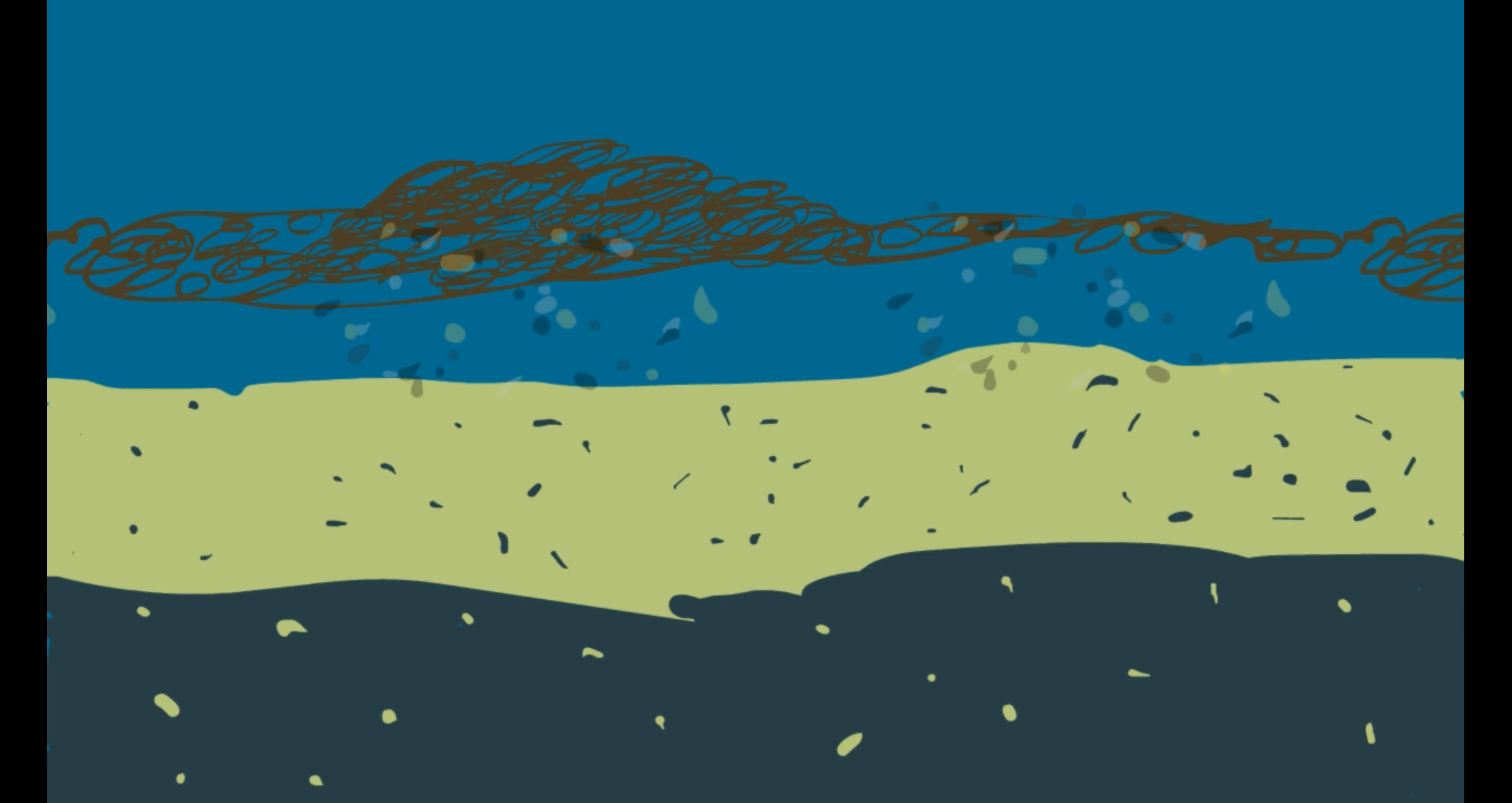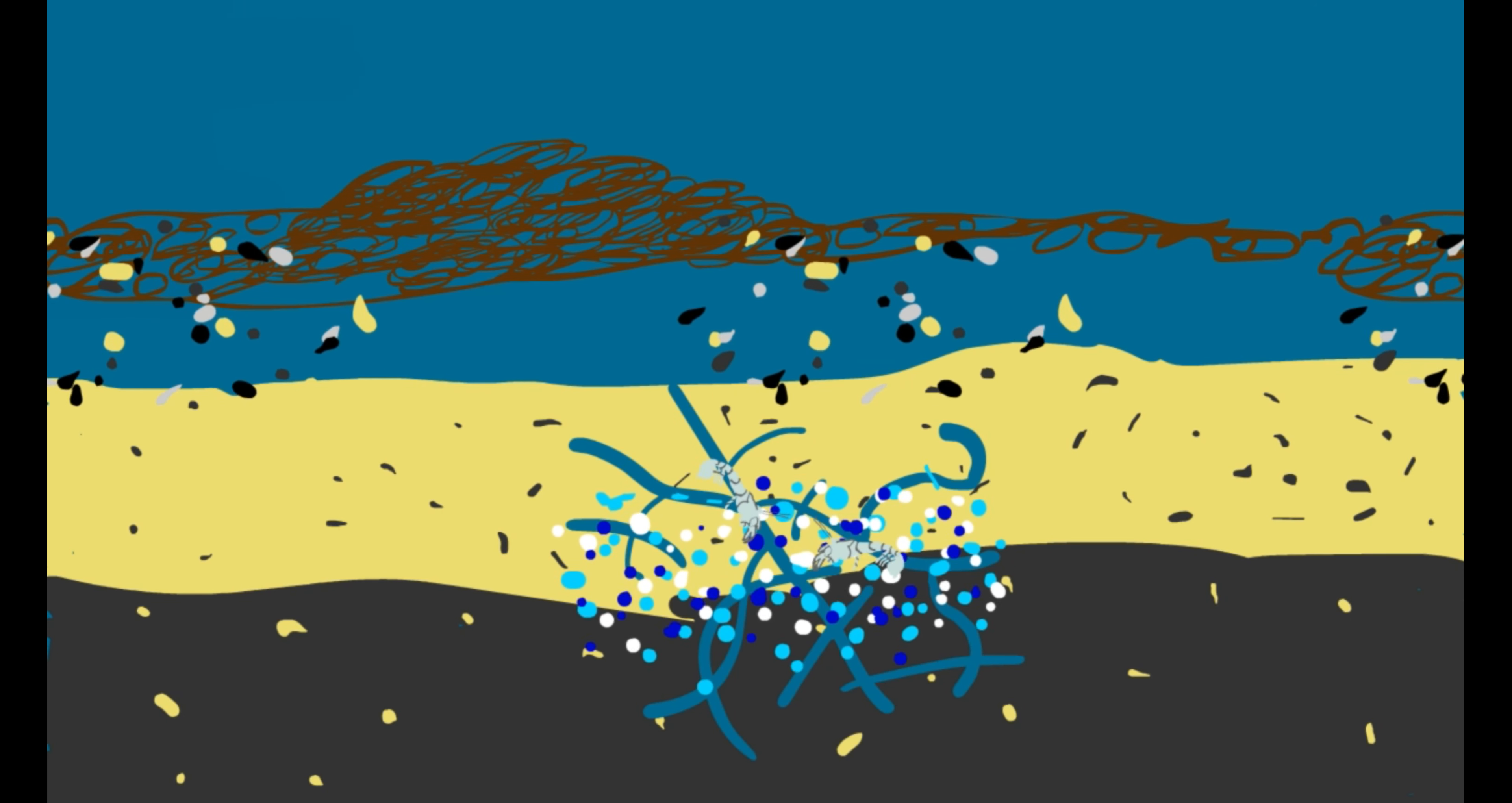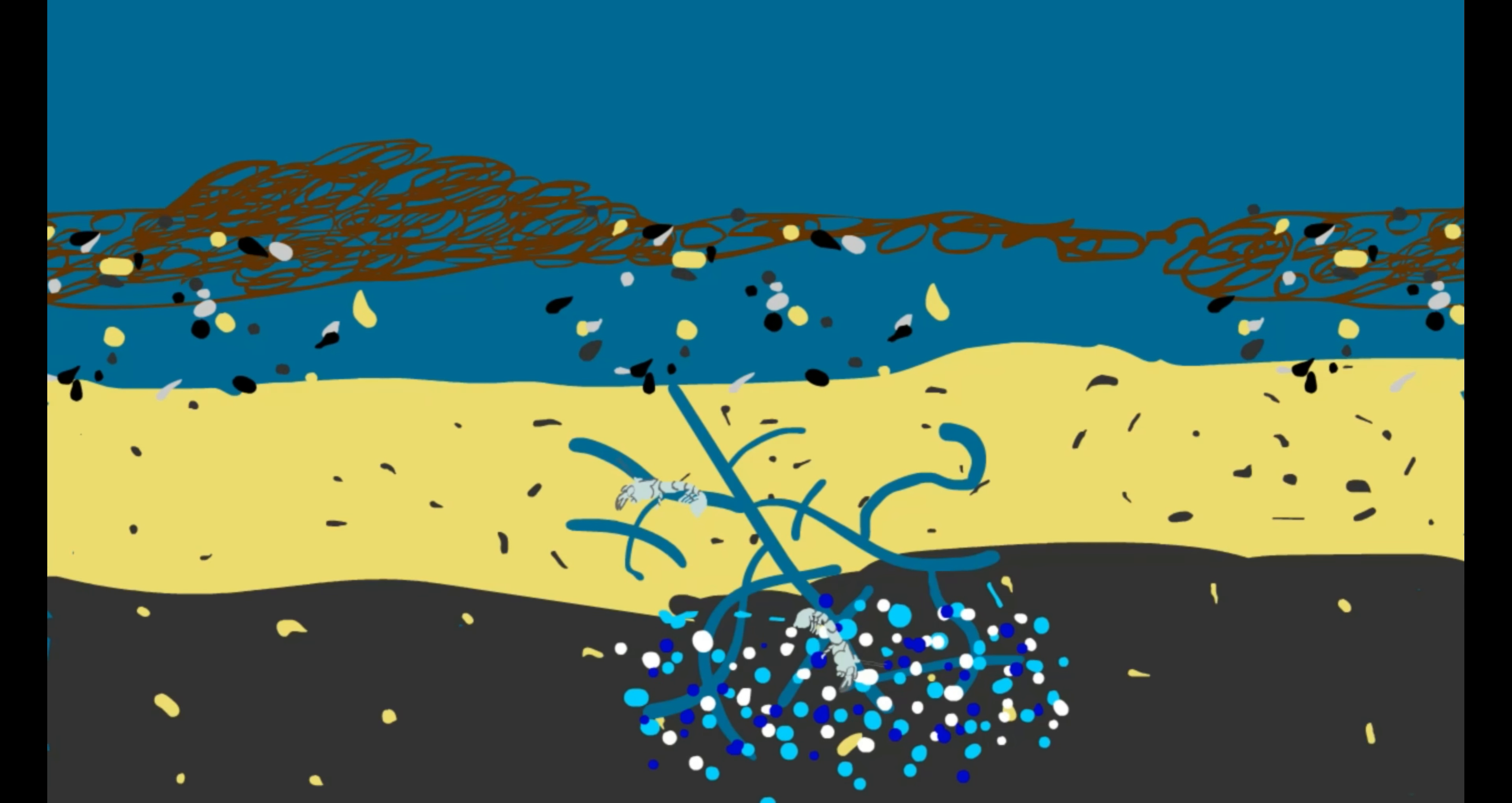These small shrimp have a huge effect on the bottom of the bay. They live in deep, complicated, and beautiful burrows that provide a pathway for oxygen-rich water to reach areas of the black sand layer. This creates more living space for other organisms.